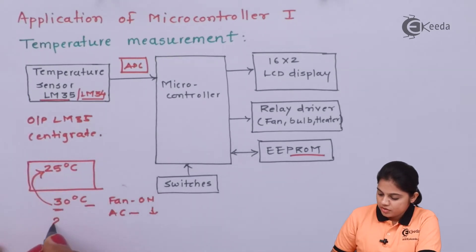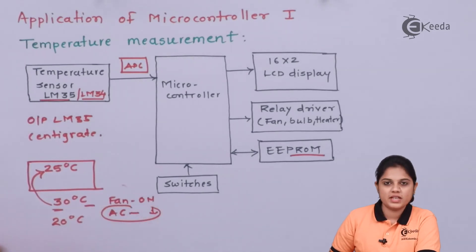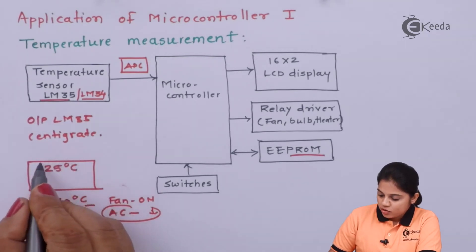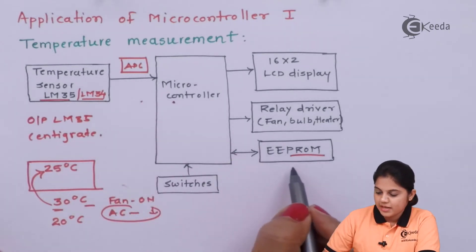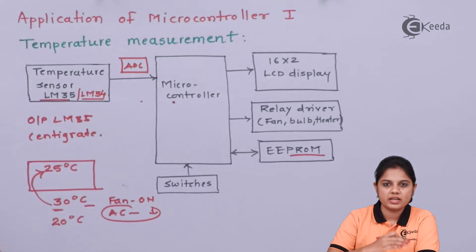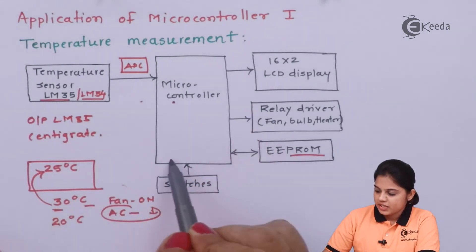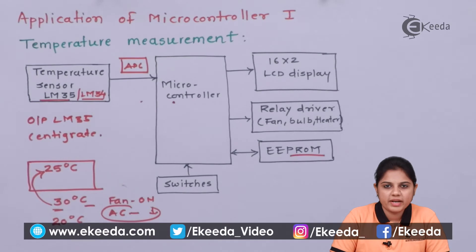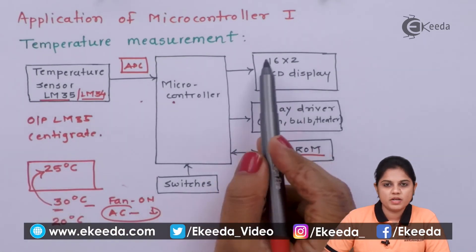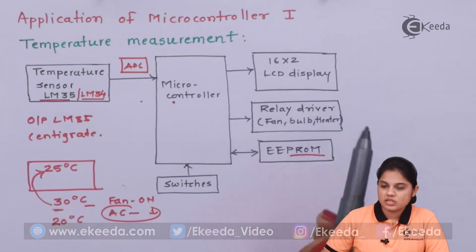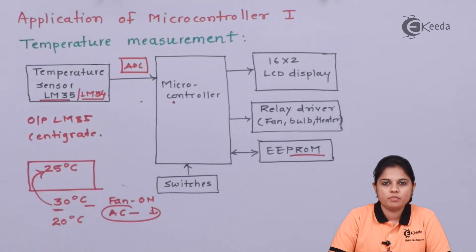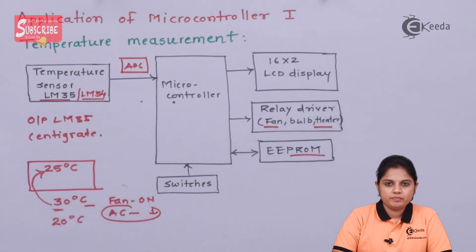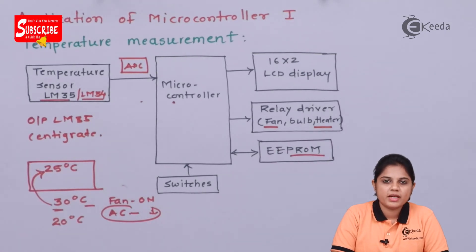If the temperature received is 20°C, then the AC should be switched to maintain the room temperature at 25°C. According to the data received at the microcontroller, the program is executed to either increase or decrease the temperature. After that, the value is displayed on the LCD display showing the exact temperature. According to the program, the device interfaced with the microcontroller is controlled — the fan can be switched on or off, the AC can be switched on or off, and the heater can be controlled.